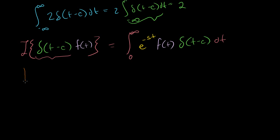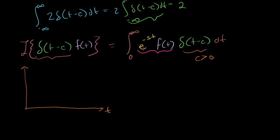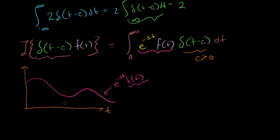So let me draw what we're trying to take the integral of. We only care from 0 to infinity, and I'll assume that c is greater than 0 — that the delta function pops up someplace on the positive t-axis. What is e to the minus st times f of t going to look like? I don't know — it's going to be some function. e to the minus st starts at 1 and drops down, but we're multiplying it times some arbitrary function, so I'll just draw it like this. This right here is e to the minus st times f of t, and f of t is what gives it its arbitrary shape.